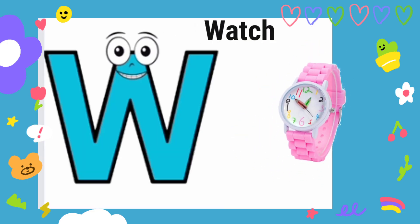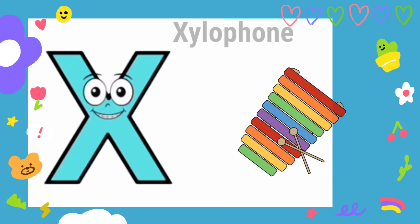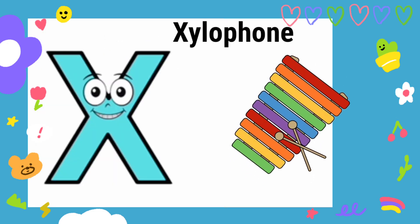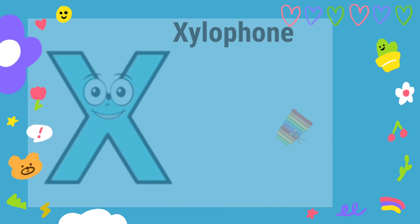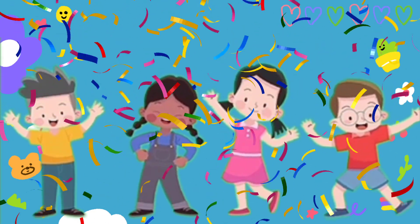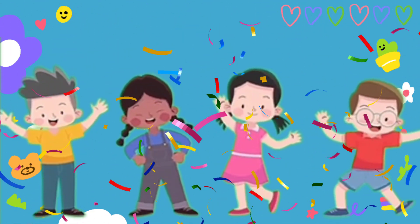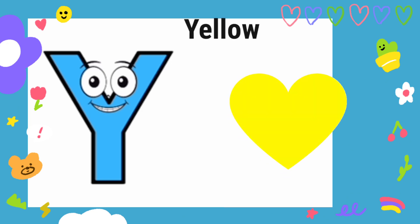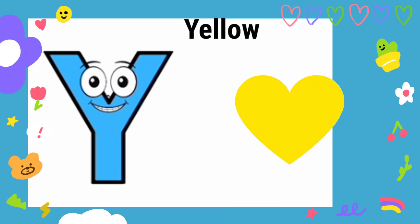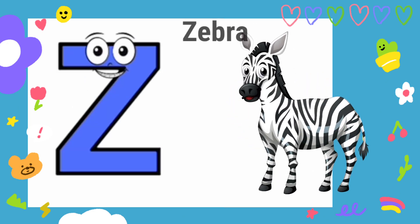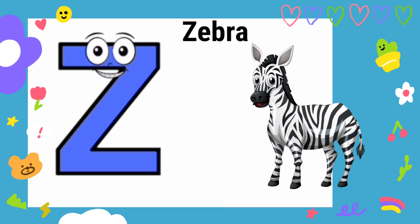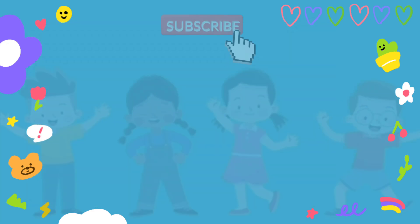W is for Watch, W-W-Watch. X is for Xylophone, X-X-Xylophone. Y is for Yellow, Y-Y-Yellow. Z is for Zebra, Z-Z-Zebra.